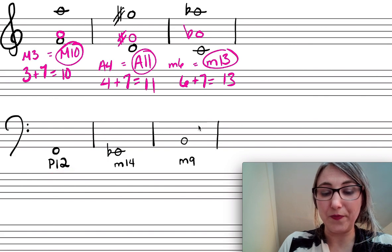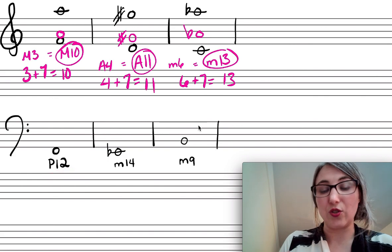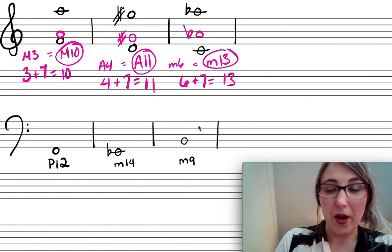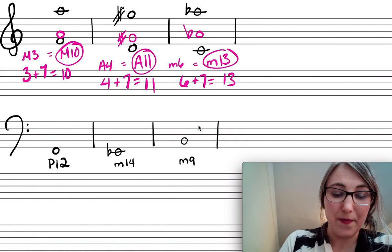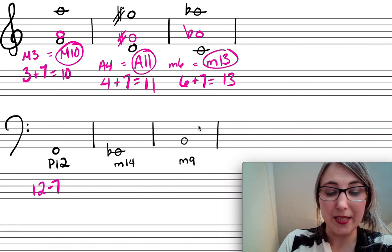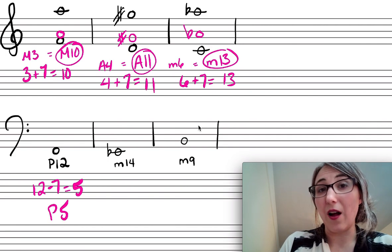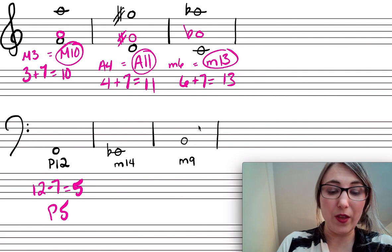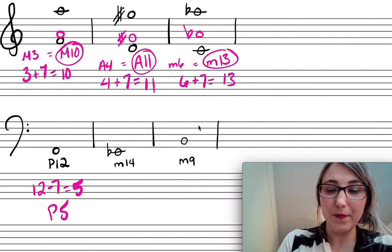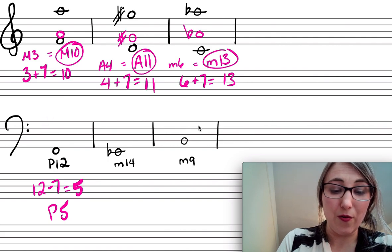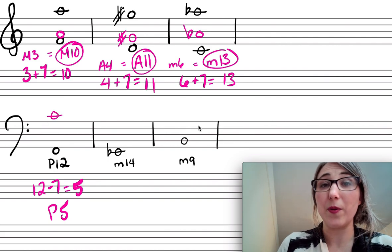Now let's try constructing compound intervals. I'm given a perfect 12th and need to build it. A perfect 12th: 12 minus 7 equals 5, so it's a perfect fifth plus an octave. A perfect fifth above F is C, and then I add an octave, moving this C up — and there is the perfect 12th.